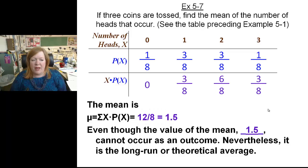Even though the mean value of 1.5 cannot occur as an outcome, nevertheless, it is the long run or theoretical average, or one and a half heads, their whole numbers. It's still considered our theoretical average, hence the word theory.